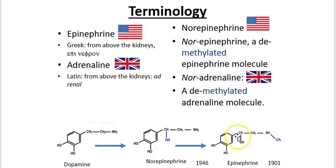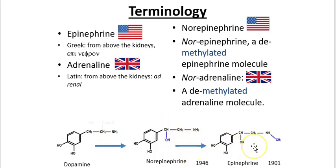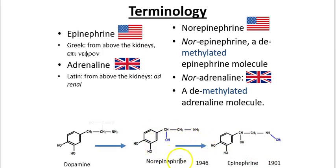The way this worked out biochemically is that dopamine gets converted into norepinephrine, and norepinephrine gets converted into epinephrine. Interestingly, we discovered epinephrine in 1901, and we didn't discover norepinephrine, at least in terms of its chemical structure, until 1946. That's how this terminology came about.